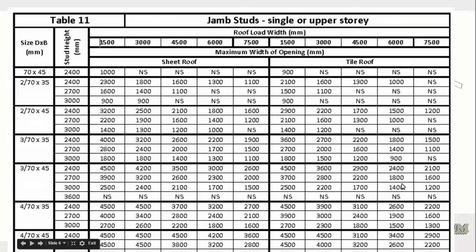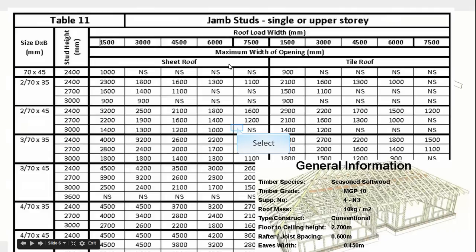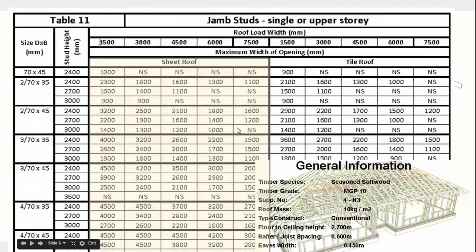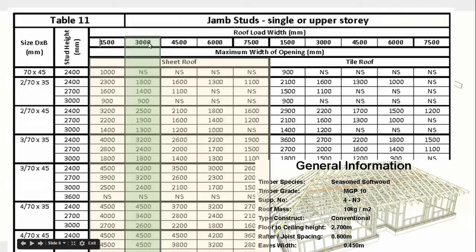In span table 11, make sure you're in the right timber species and the right durability rating. We're going to look at sheet roof first, so we need that column. Our roof load width was 1800, so we can't use the 1500 column — we have to use the 3 metre column. You'll notice the table is broken up into different stud heights, and our height was 2.7, so we're going to use the 2.7 rows.